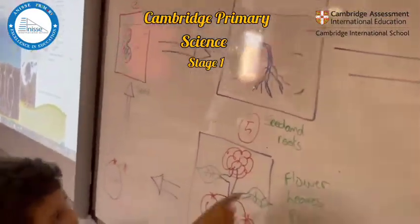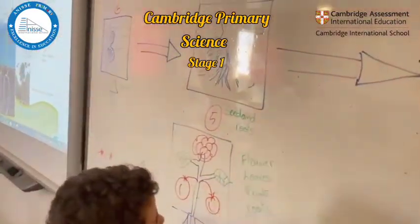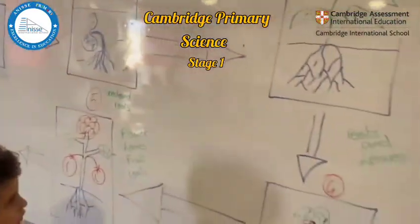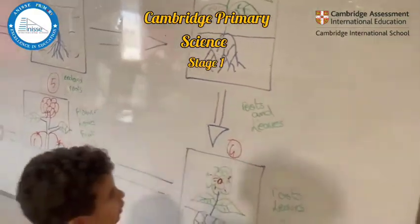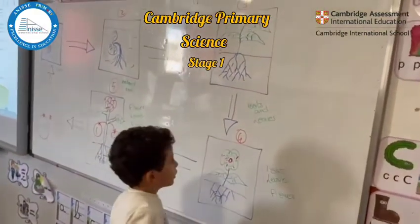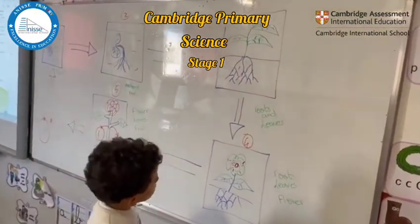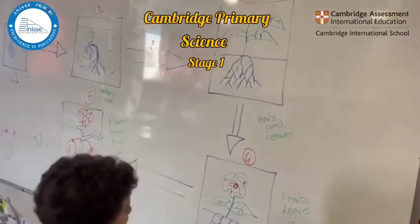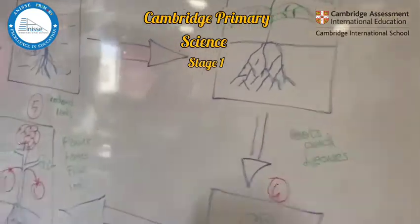And here, number two? Seed and roots. Number three? Leaves, roots, and leaves. Roots and leaves, that's it.